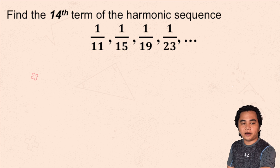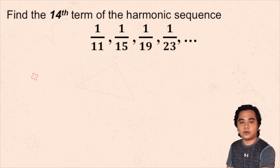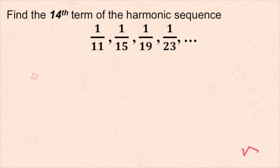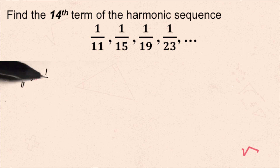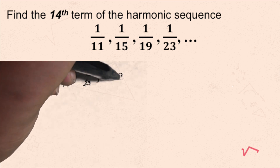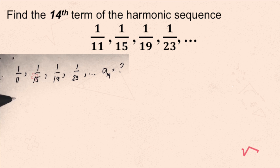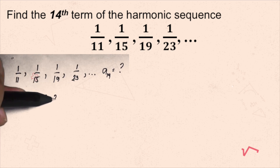Let's start with this problem. Find the 14th term of the harmonic sequence: 1/11, 1/15, 1/19, and 1/23. My way of solving harmonic sequence is by using the arithmetic sequence formula, which means I should convert this first into arithmetic sequence. The arithmetic conversion is: the reciprocal of 1/11 is 11, the reciprocal of 1/15 is 15, the reciprocal of 1/19 is 19, and the reciprocal of 1/23 is 23.